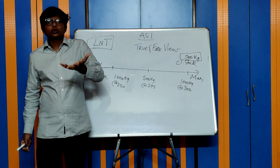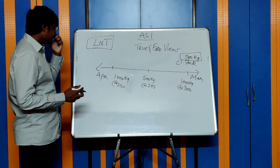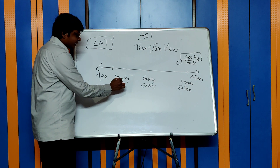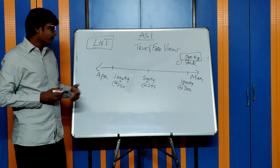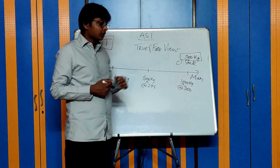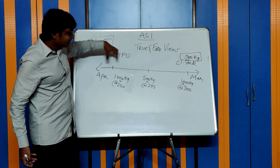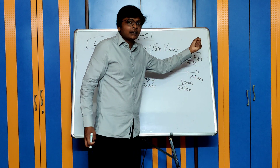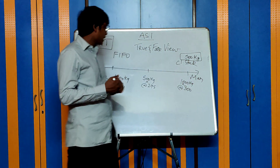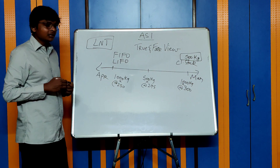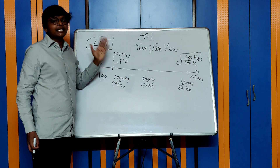You cannot randomly choose a method — FIFO, LIFO, or weighted average. You need to choose a method which gives a true and fair view. With weighted average, you multiply 1,000×250, 500×275, 1,000×300, and compute a weighted average rate. With FIFO (first in, first out), you assume goods that came in first were used first, so the 500 kgs in stock came from the 1,000 kgs purchased at year-end. With LIFO (last in, first out), you assume the 500 kgs in stock is from the 1,000 kgs purchased at the beginning of the year.